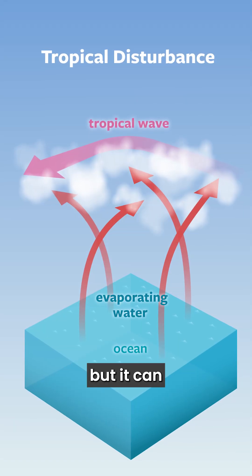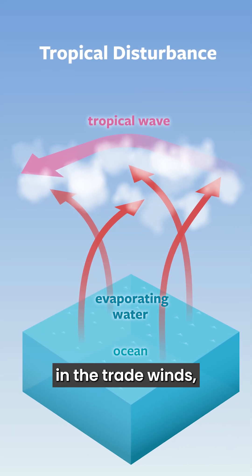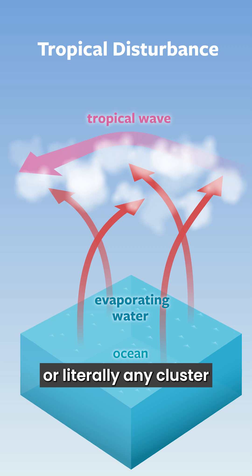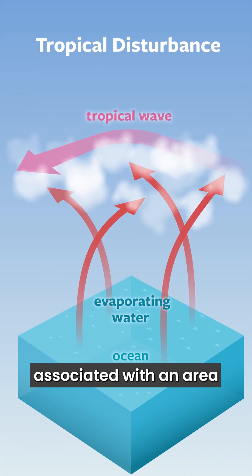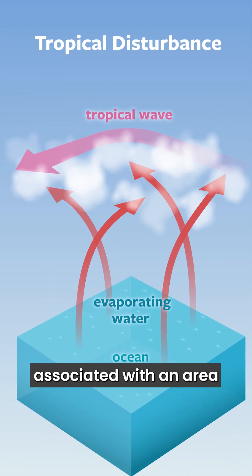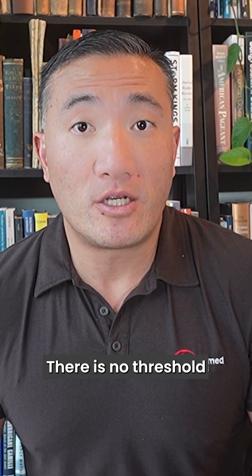A tropical disturbance is any area of disturbed weather over the tropical oceans. It's a weird name, but it can refer to either a tropical wave in the trade winds or literally any cluster or blob of thunderstorms associated with an area of unsettled weather in the tropics. There is no threshold of wind speed associated with a tropical disturbance.